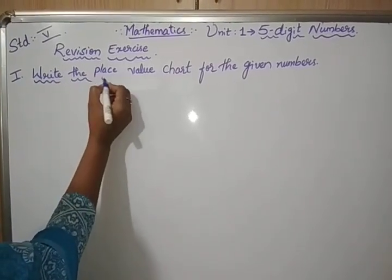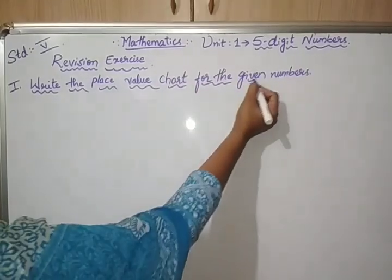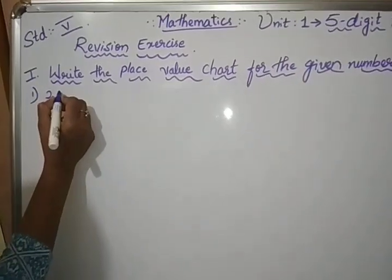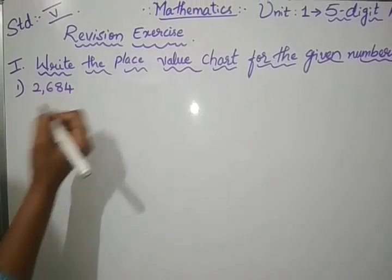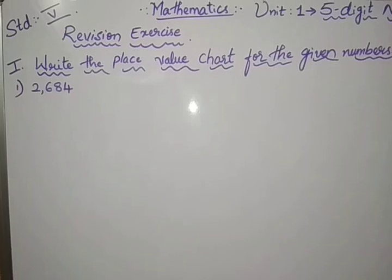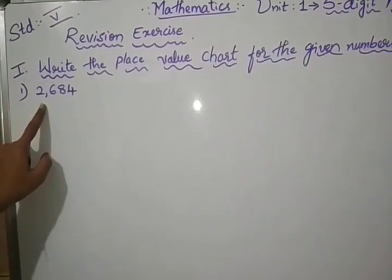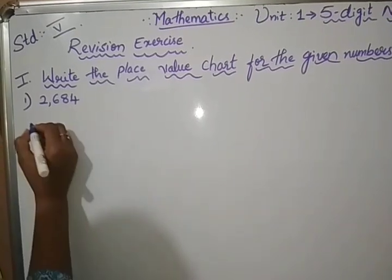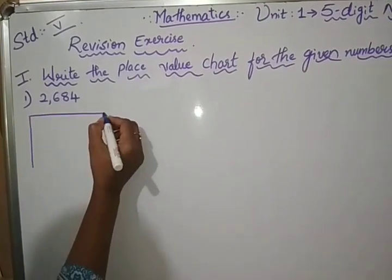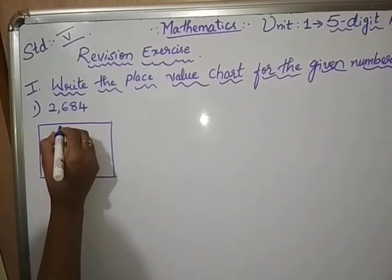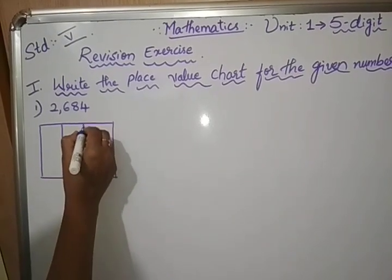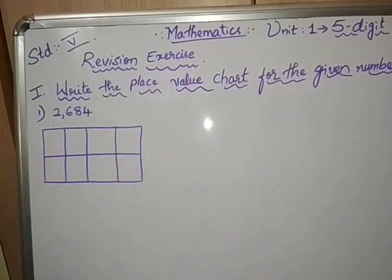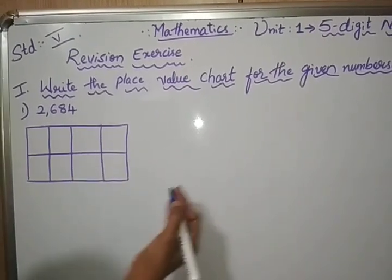Roman 1, in revision exercise, write the place value chart for the given numbers. The first number is 2,684. These numbers should be written according to the place value chart. How to write the place value chart? Just draw the box there, write down the places.